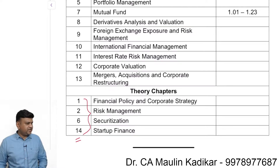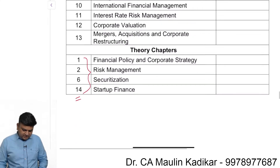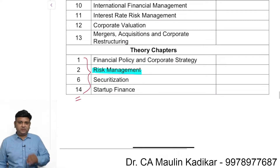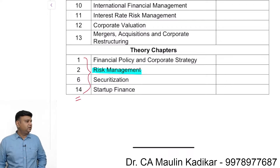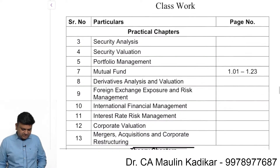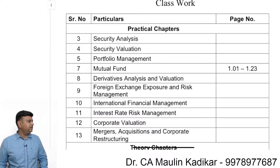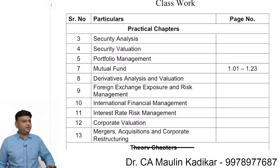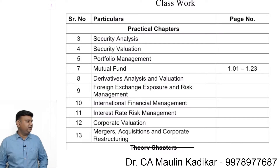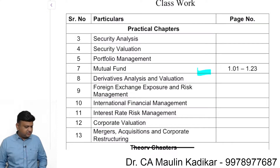The theory-only chapters are the first chapter, second chapter, sixth chapter, and 14th chapter. In the second chapter, there is one practical concept called Value at Risk. The remaining chapters have both theory and practical, just like in the second level where capital budgeting had both practical and theory components — a combination of both.